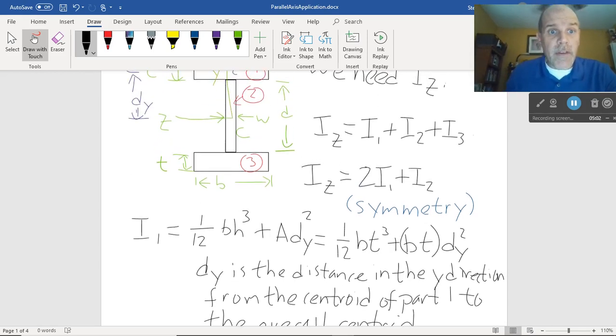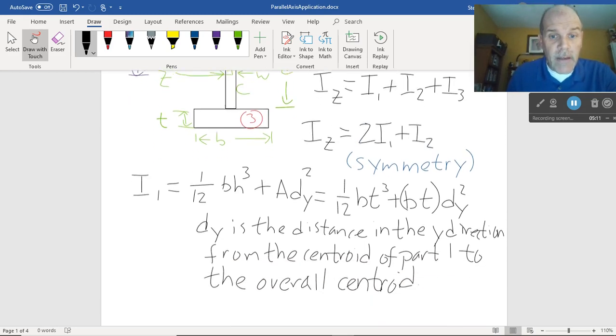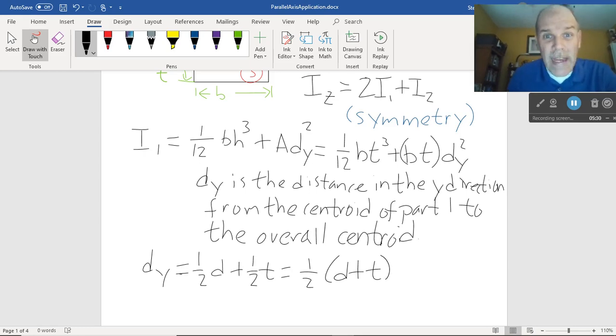Now, I've got to figure out what dy is because once I do that, everything's good. Well, this dy looks like it's going to be 1/2 of this depth d over here, 1/2 of the depth d plus 1/2 the thickness. dy equals, the way I've drawn it, 1/2 d plus 1/2 t equals, because math works this way, 1/2 the quantity d plus t.